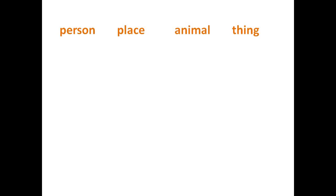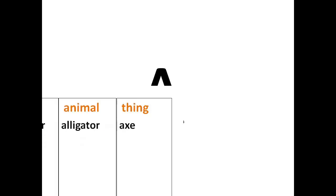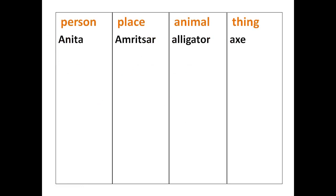Let us play a game wherein we will write the name of a person, place, animal and thing starting with letter A. You can write in your notebooks. My answers are Anita, Amritsar, Alligator, Axe.